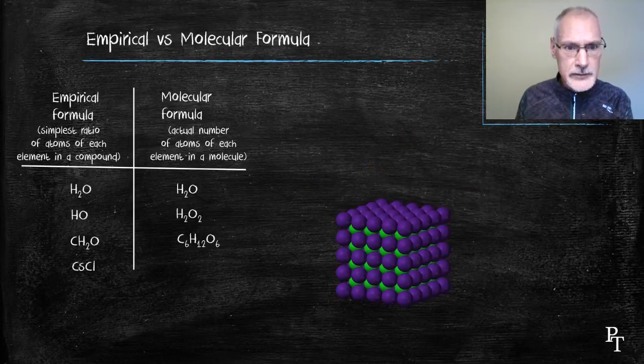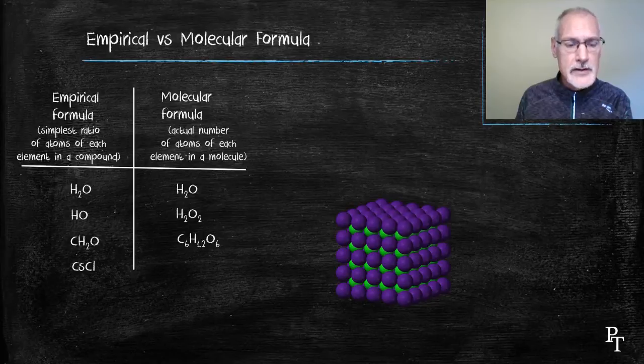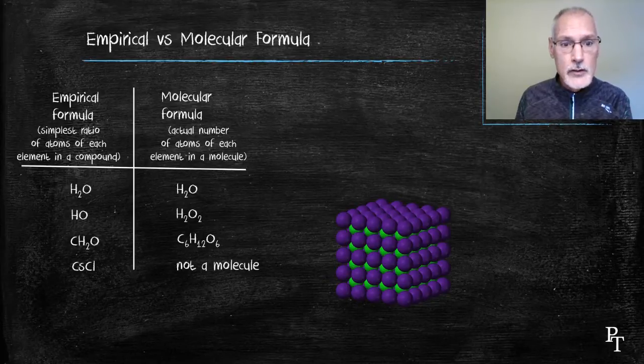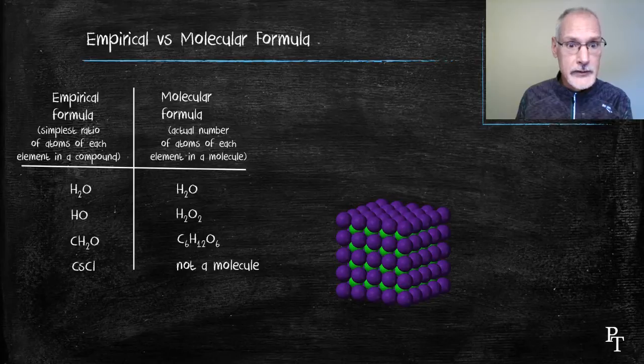A word here about ionic materials. Ionic materials don't have a molecular formula because they don't make molecules, and they already are expressed in lowest terms as they reflect the lowest ratio of ions that are present in a substance.